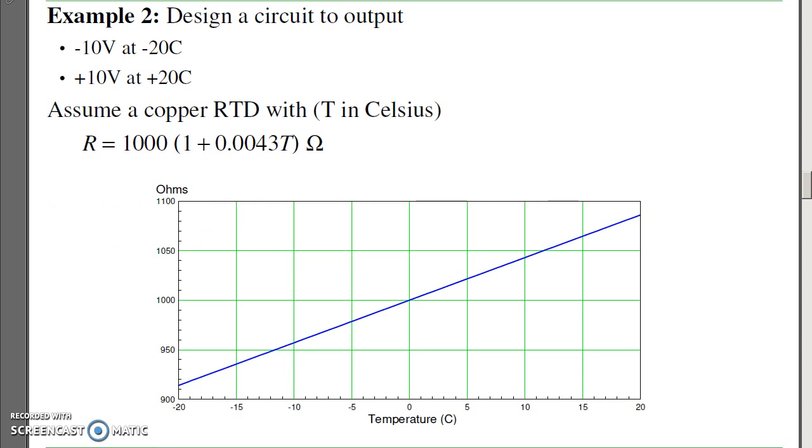A second example. Let's design a circuit to use a copper RTD, and I want the output of the circuit to go from minus 10 volts at minus 20C to plus 10 volts at plus 20C. The first step is find the resistance versus temperature. If I plug in temperature going from minus 20 to plus 20 in this equation, the resistance varies from about 915 to 1180.